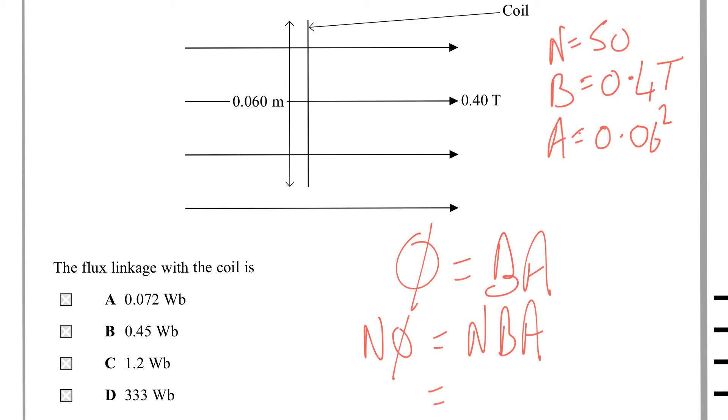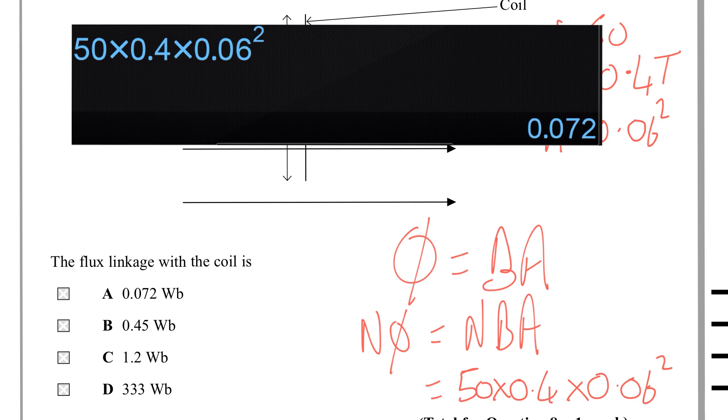And we need to square that because it's a length times width thing. So we've got 50 times 0.4 times 0.06 squared. So we just need to fire that into our calculator, and I'm getting 0.072 of a Weber, so it must be A.